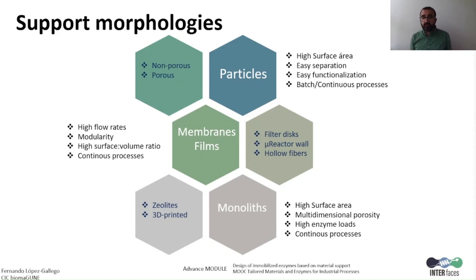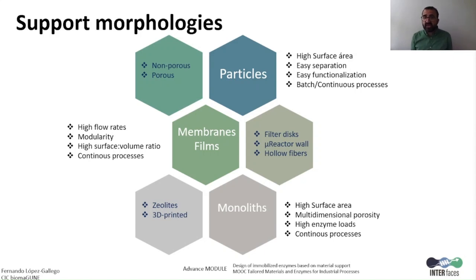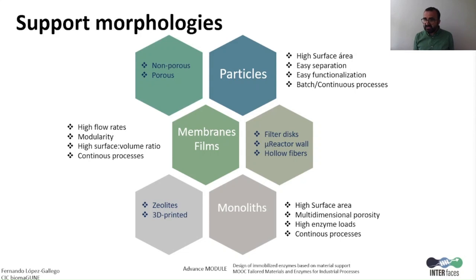Briefly, we can have three main morphologies of the material for enzyme immobilization: particles, normally spherical; membrane films; and monoliths. Particles can be porous or non-porous depending on their size. They normally have a high surface area to immobilize high amounts of enzymes per mass of material. They can be easily separated if the particle size is suitable or if they contain magnetic materials. They can be easily functionalized in batch processes, and when the enzyme is immobilized, they can be integrated into several types of reactors to perform both discontinuous and continuous processes.